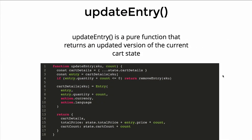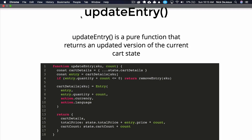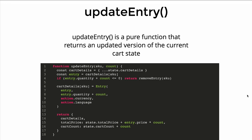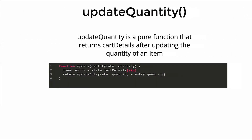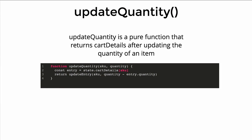We've got updateEntry, and another method called updateQuantity. This is different because it accounts for the experience where if you click 'add item to cart' and then click it again, this is what's used under the hood to properly update those values. And then you've got removeEntry, which I'm sure you expected. updateQuantity is specifically for updating the quantity of a SKU, and you can see it's actually returning updateEntry at the end.